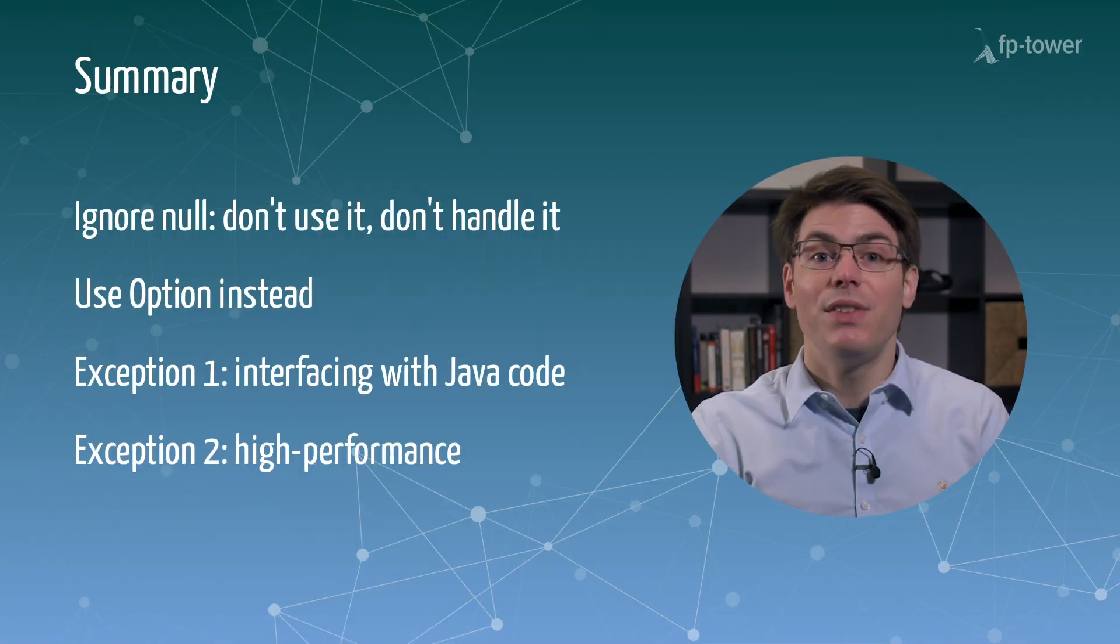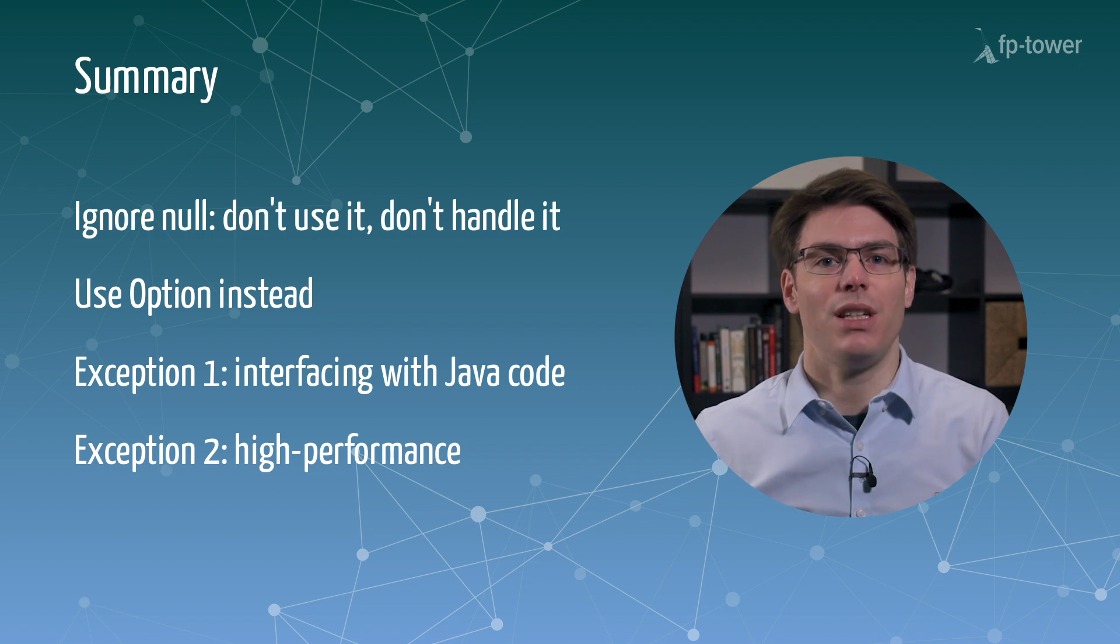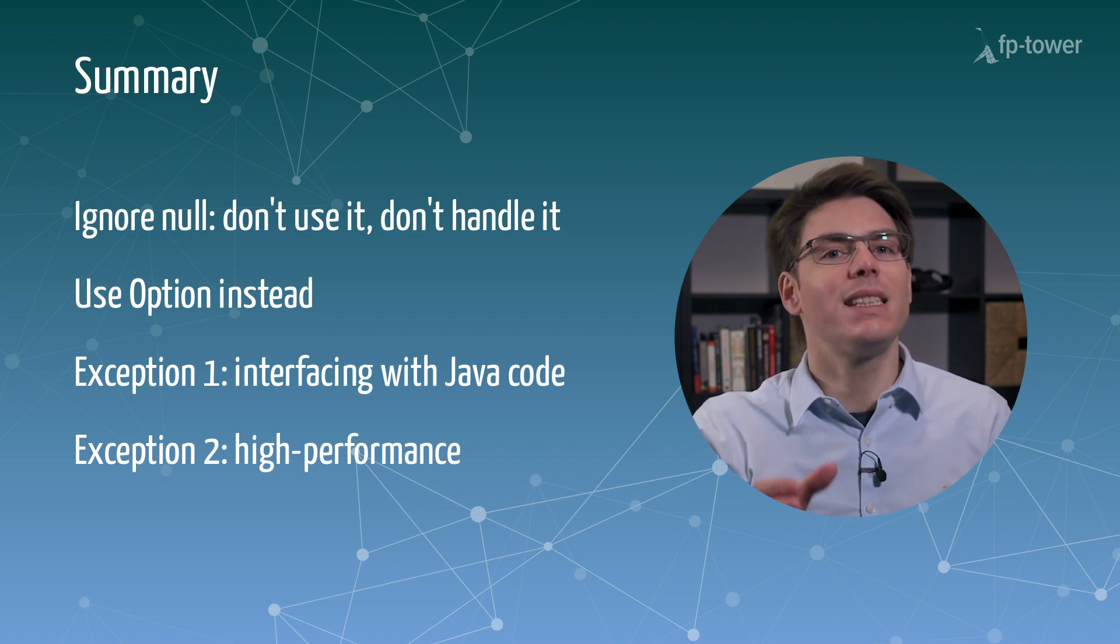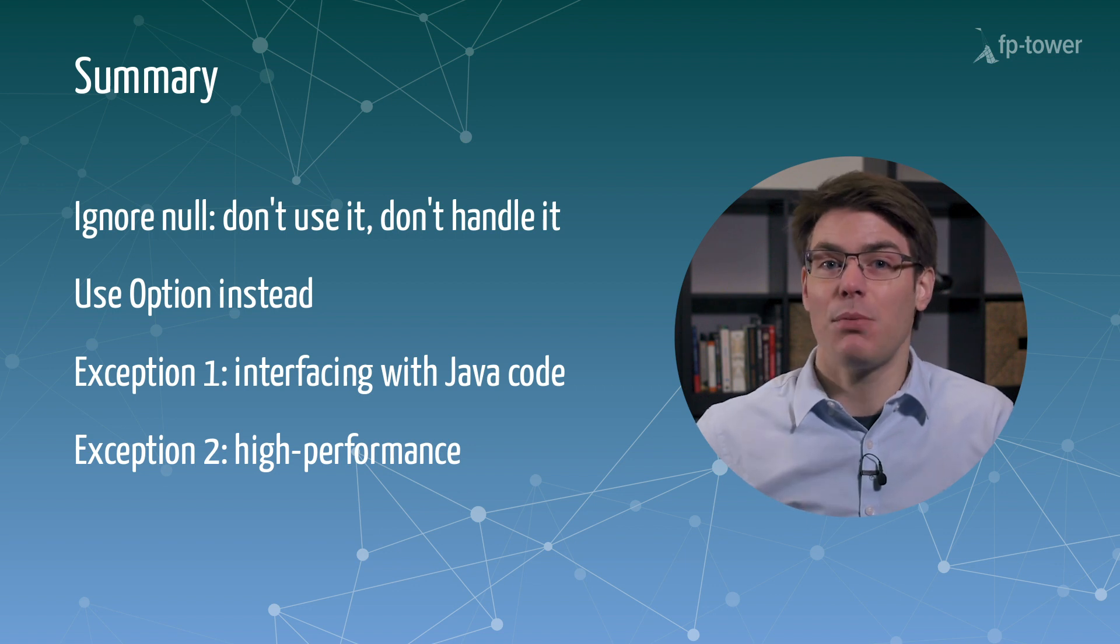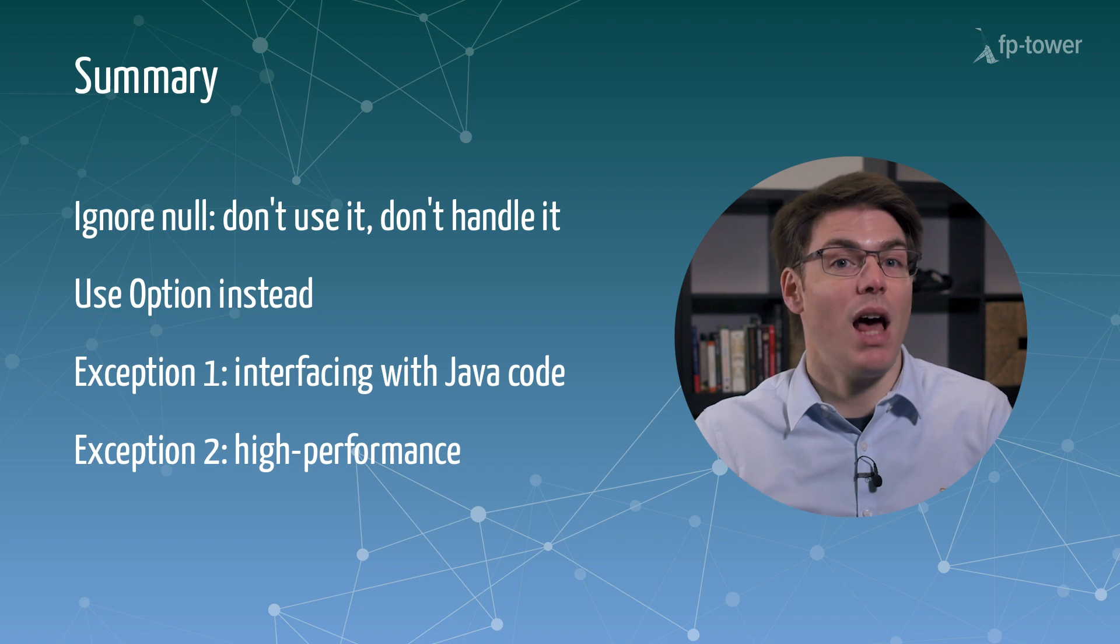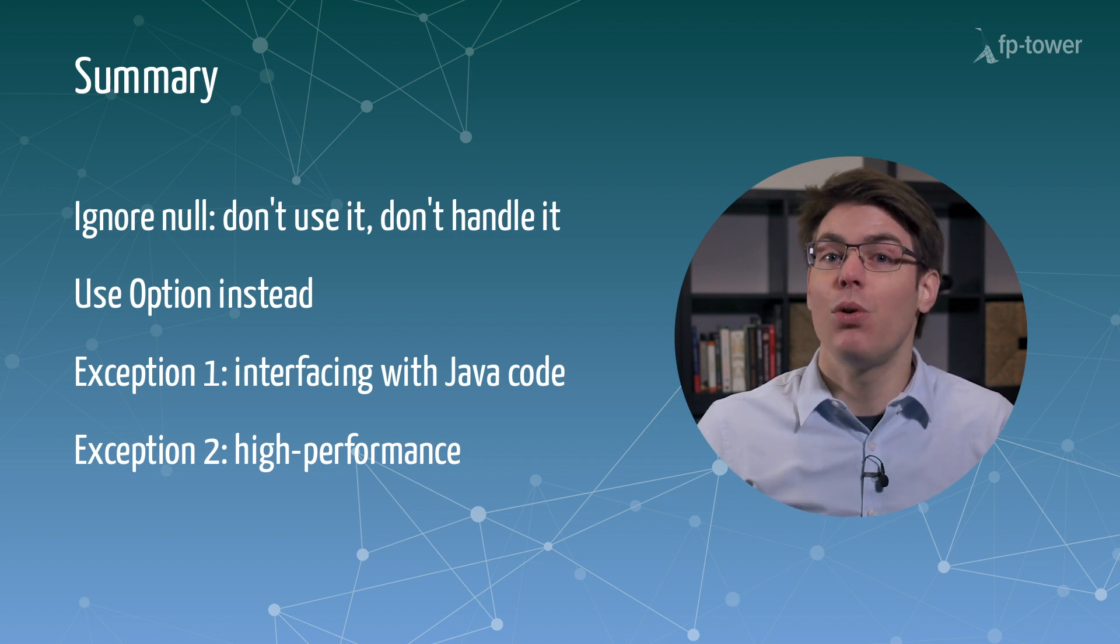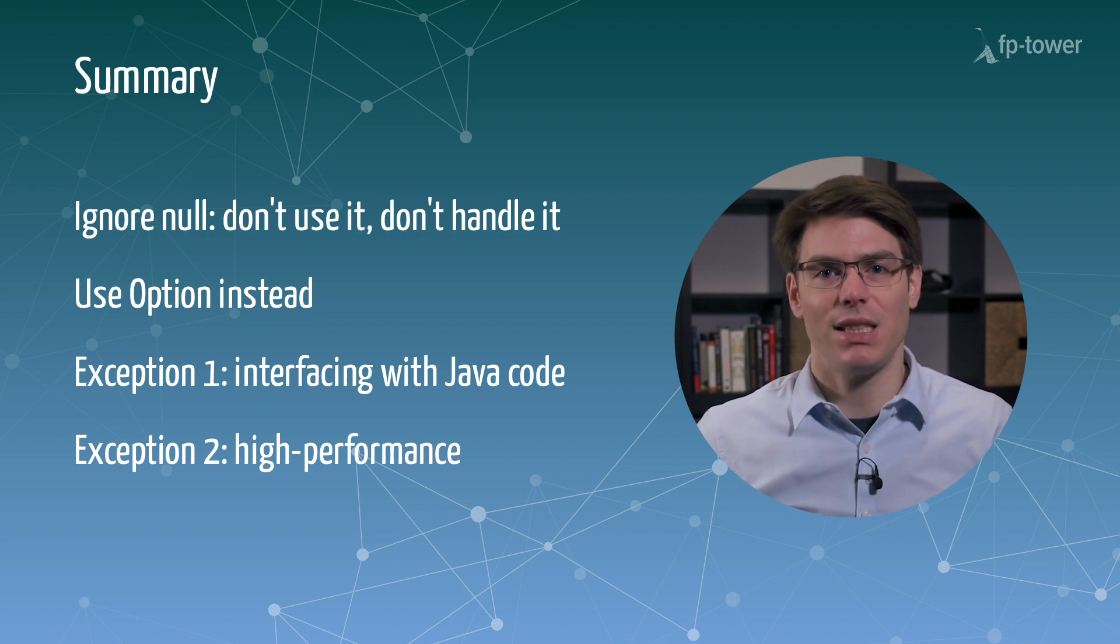In summary, we have discussed how the Scala community has chosen to ignore null completely, instead preferring Option because it offers a safer approach. We also explored two exceptions to this rule: one, when interfacing with Java libraries, and two, when developing performance-sensitive code.